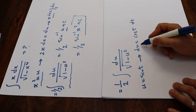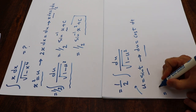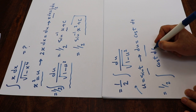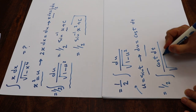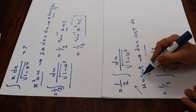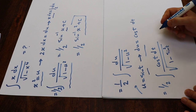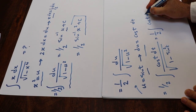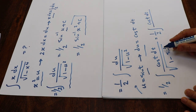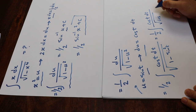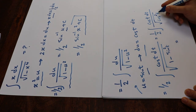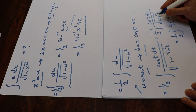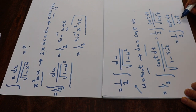Now if you substitute these two expressions into this integral, you get 1/2 times: instead of du, write cosine(t) dt, divided by the square root of 1 minus u², where u² equals sin²(t). This simplifies to 1/2 times the square root of cosine(t) dt divided by 1 minus sin²(t), which equals cos²(t). So the square root of cos²(t) is cosine(t).